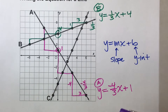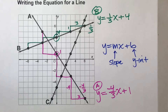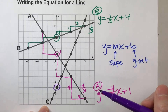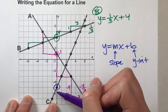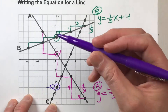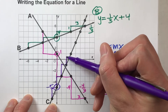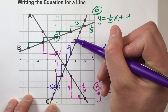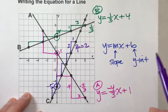Now we're on to line C. Start by finding the y-intercept. Here's the y-axis — the line crosses right there. Notice it crosses at a negative place: this is negative 4, this is negative 6, so the y-intercept is negative 5. Now for the slope — this line is going up and to the right, up and to the right, the same amount every time: up 2, right 1. So my slope is 2 over 1, which reduces to just 2.